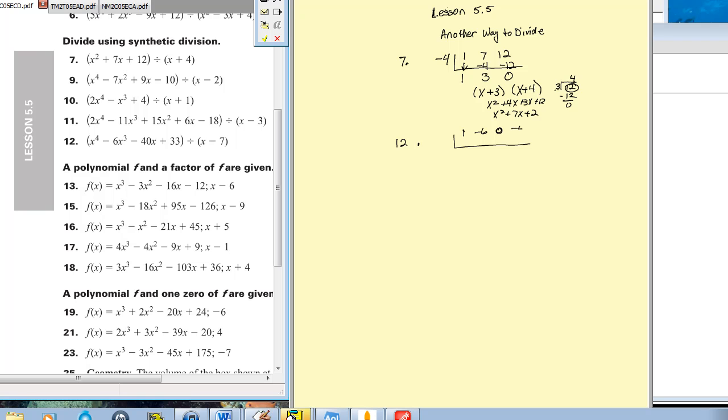And then comes my negative 40 and my plus 33. And remember I have to flip the sign on the x here. So that's my 7, so I'm going to put positive 7 out here. Bring it down, multiply, add, multiply, add, multiply, add, multiply, and then add. So 96.